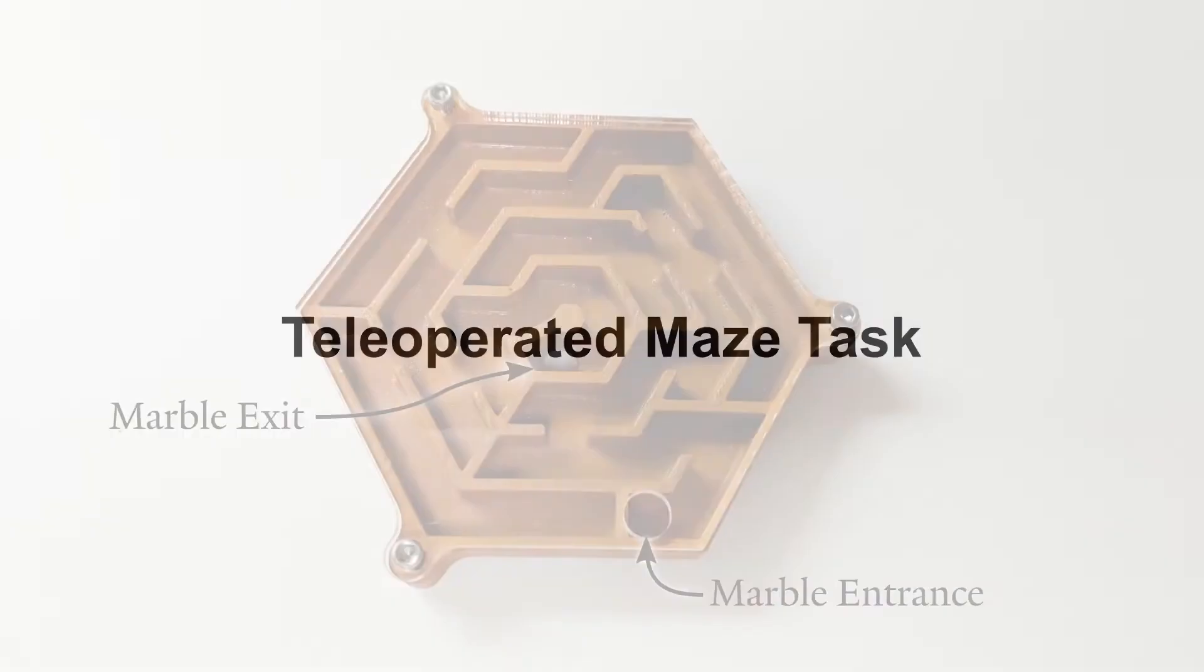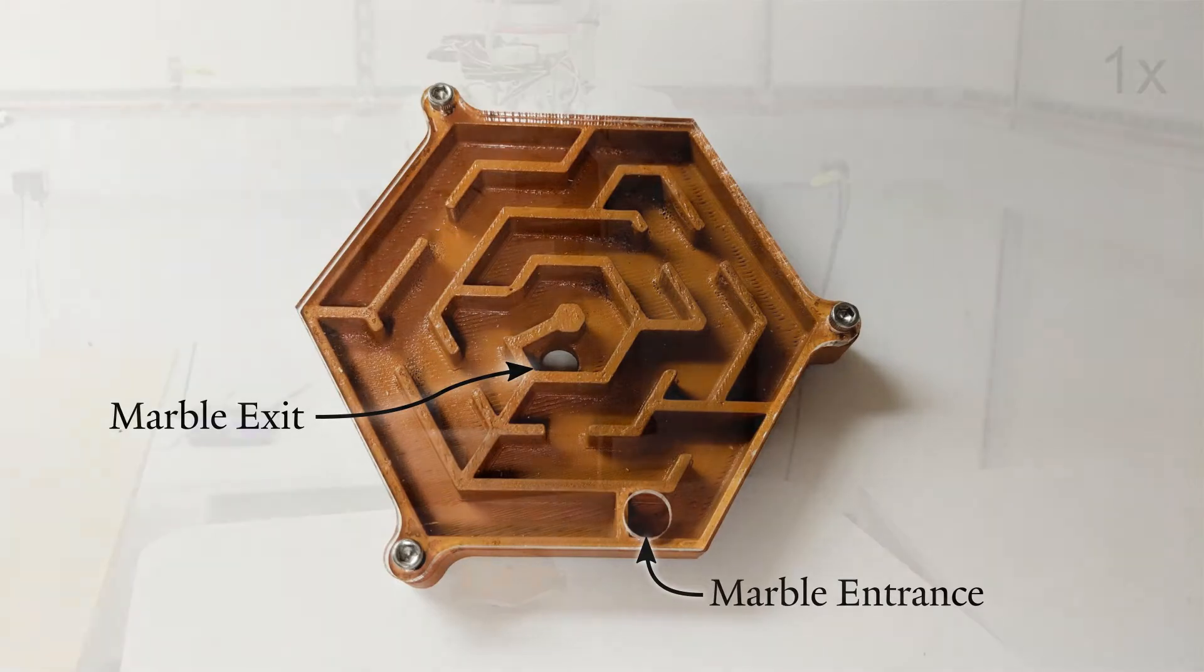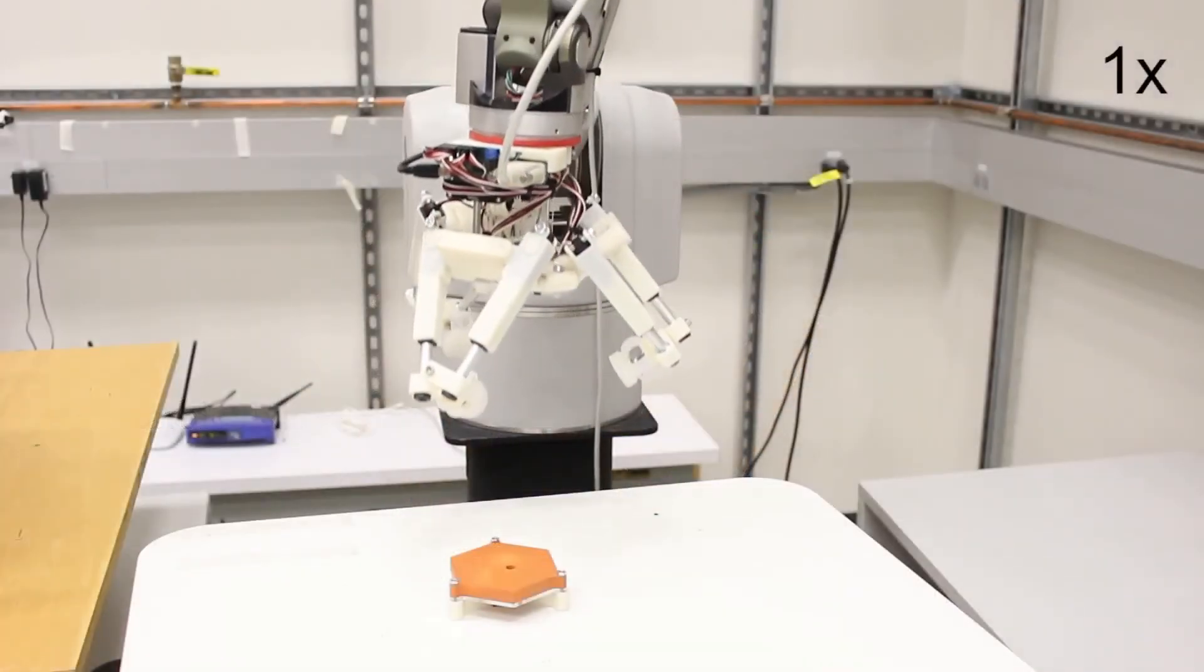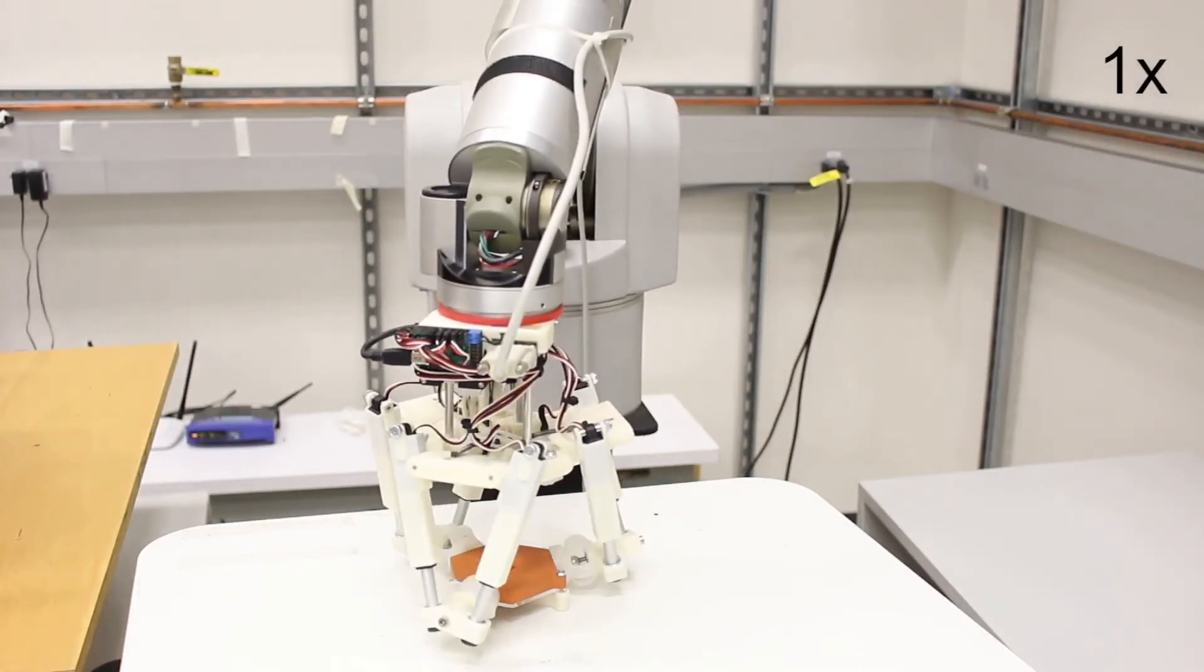Next, we perform a highly dexterous marble maze task. The operator must use the hand to maneuver a small marble from an entrance hole to an exit by tilting the toy in different directions. The robotic arm allows the hand to grasp the maze and reorient it to a pose better suited for this task.